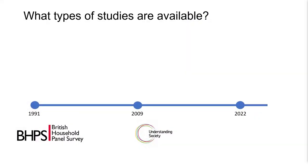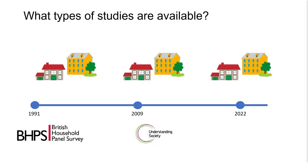What types of studies are available to researchers who are interested in mental health? In this webinar we'll deal mainly with longitudinal studies. A household panel study is a type of longitudinal research in which a group of households are selected and followed over a period of time, typically several years or more. Data are collected through repeated surveys of the same group of households, usually on an annual or biannual basis.